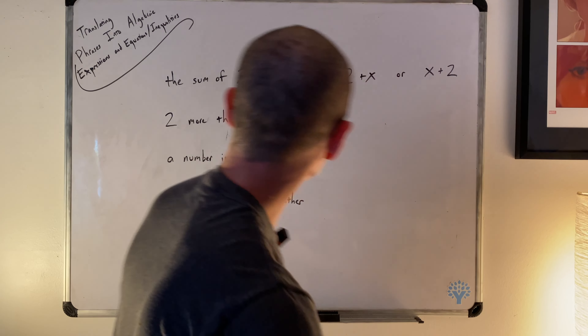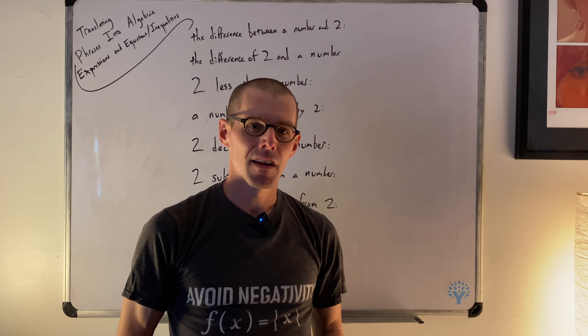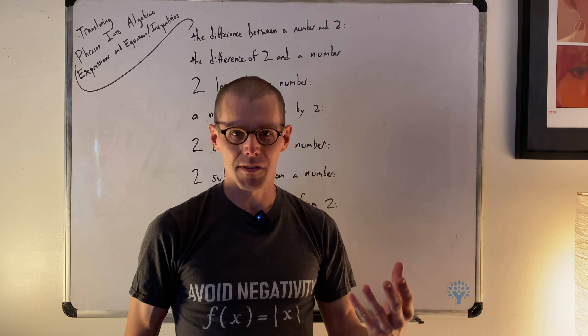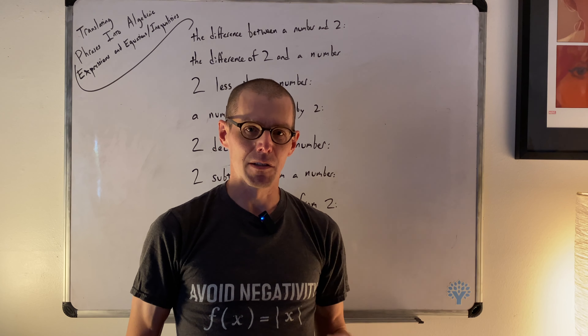Now we have a second set of phrases, and this one is about subtraction. In the same way that 'sum' encodes addition, 'difference' is the word that clues you into subtraction. Difference is the result of subtraction. In each of these, the building blocks are essentially the same: a number — our variable x — and a constant two, as the other piece in the subtraction.